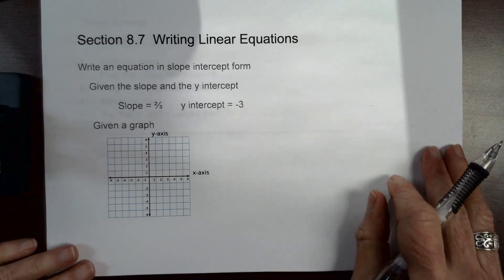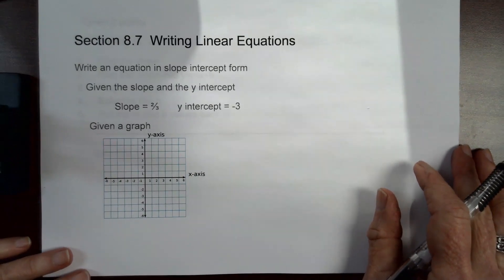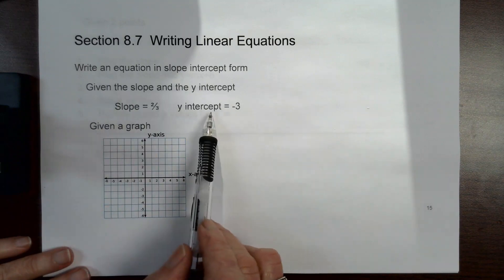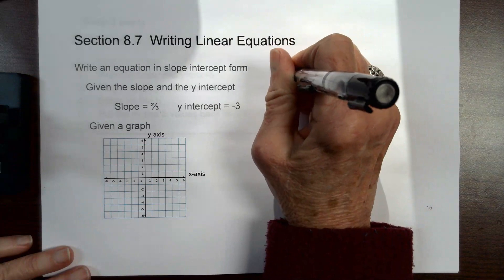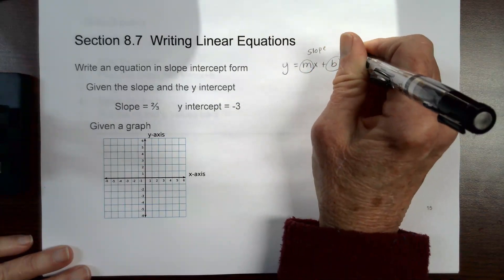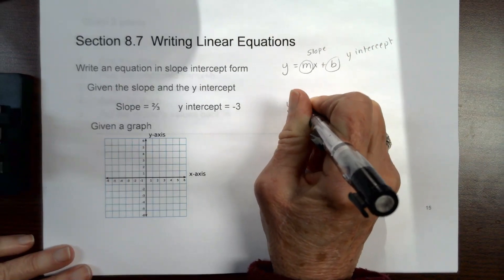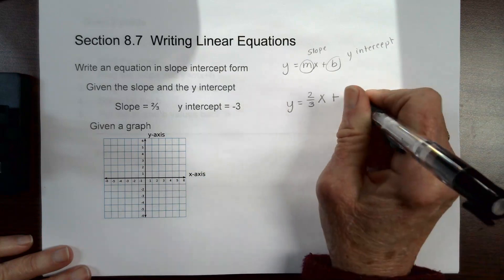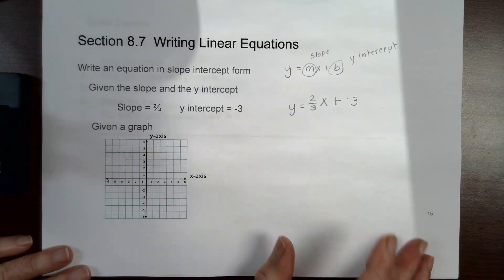Section 8.7 — we were writing linear equations. This is the opposite of graphing: rather than taking an equation and graphing it, we take information and write an equation. If they give you the slope and y-intercept, you put it in y equals mx plus b form. For slope equals two thirds and y-intercept equals negative three, the equation is y equals two thirds x plus negative three.